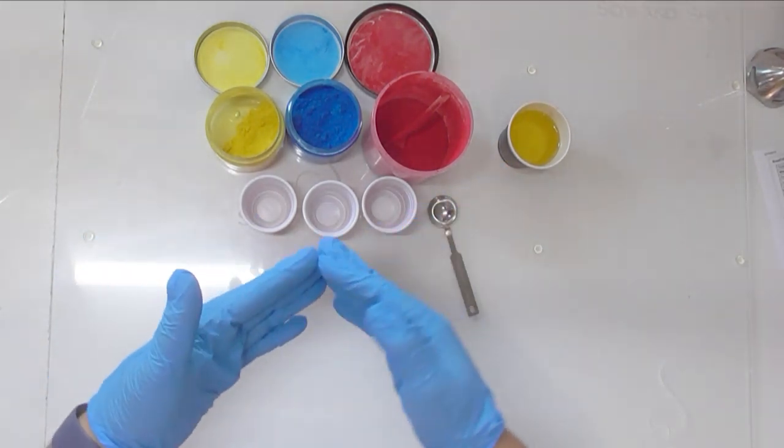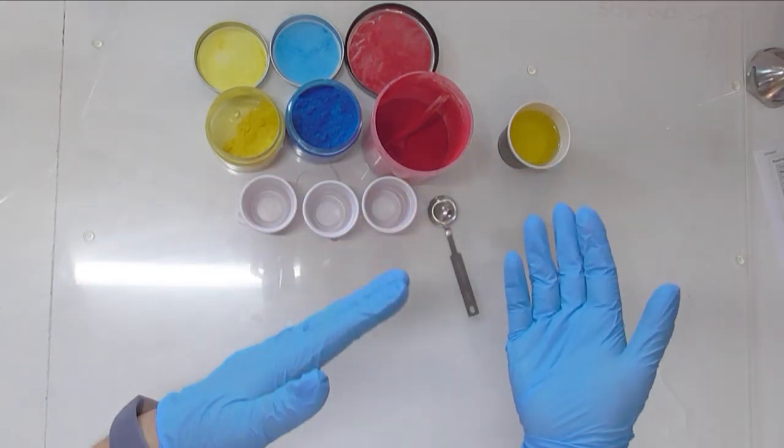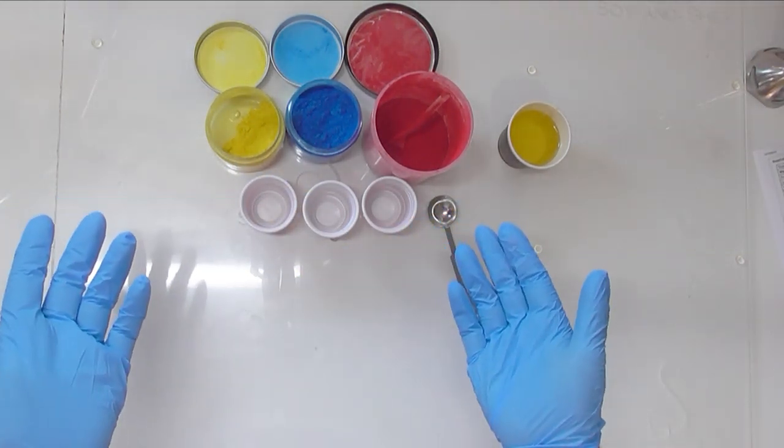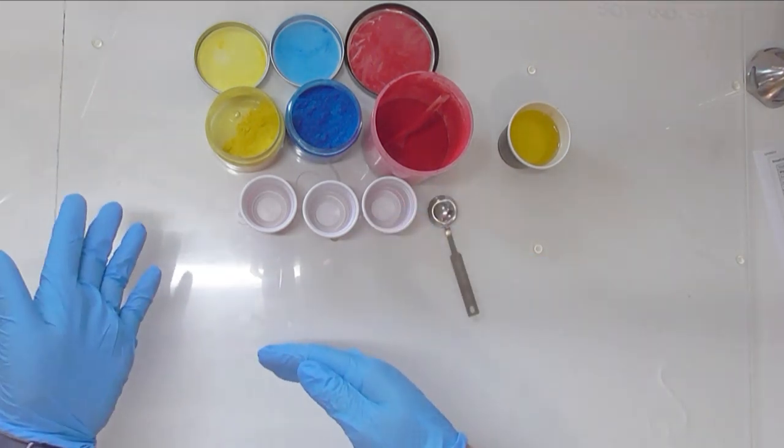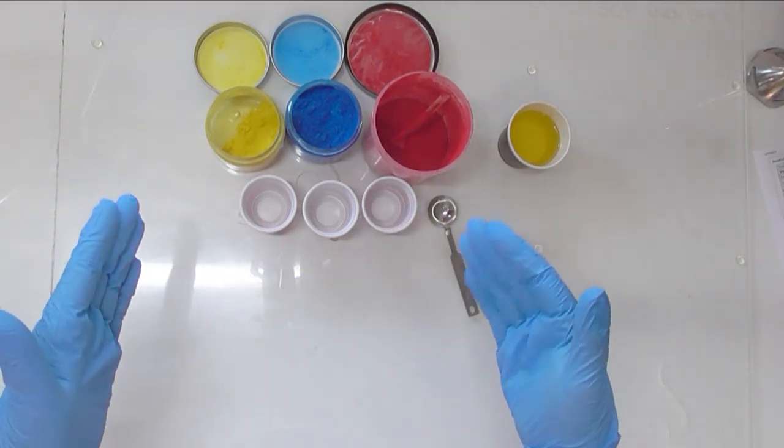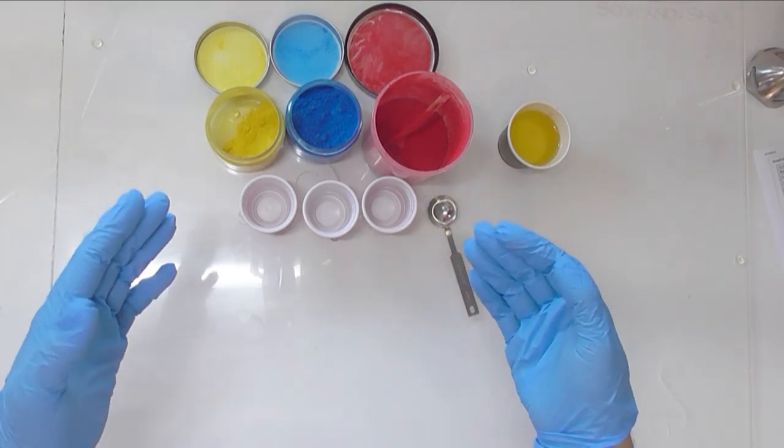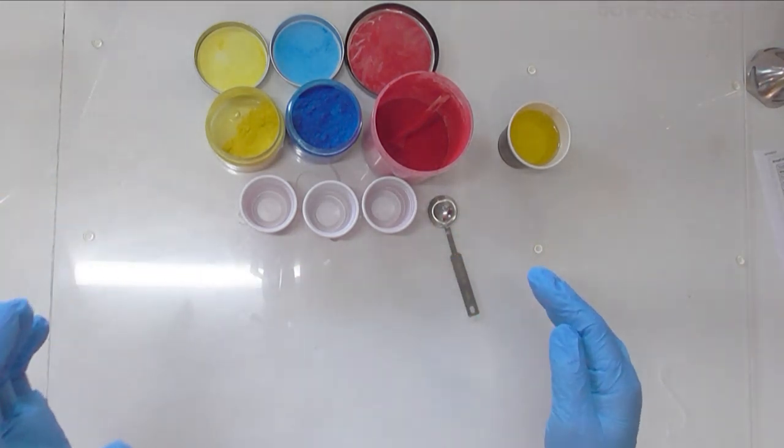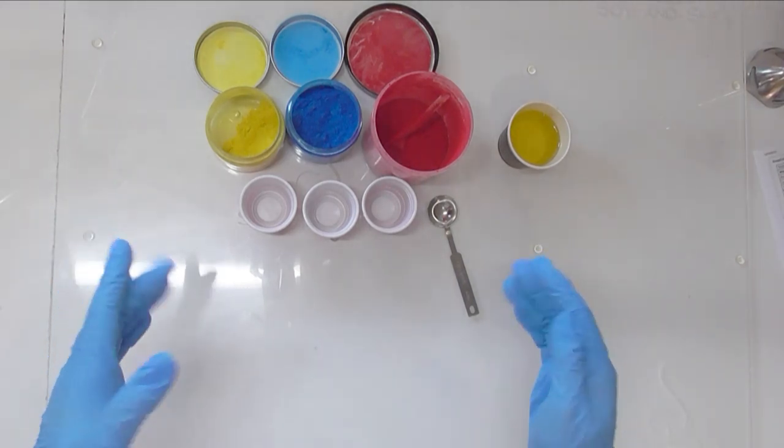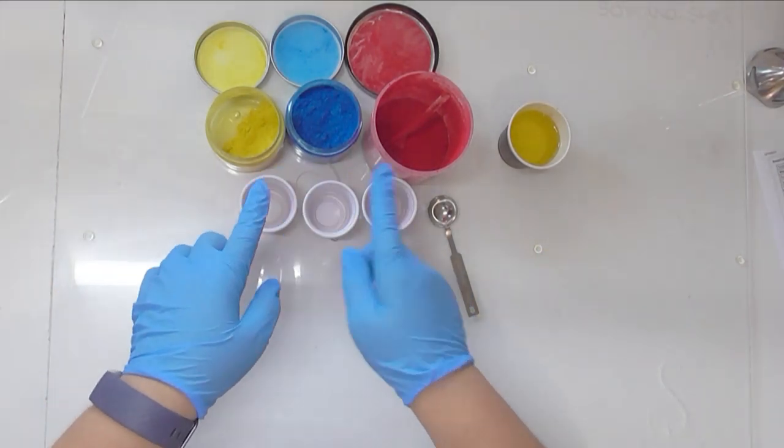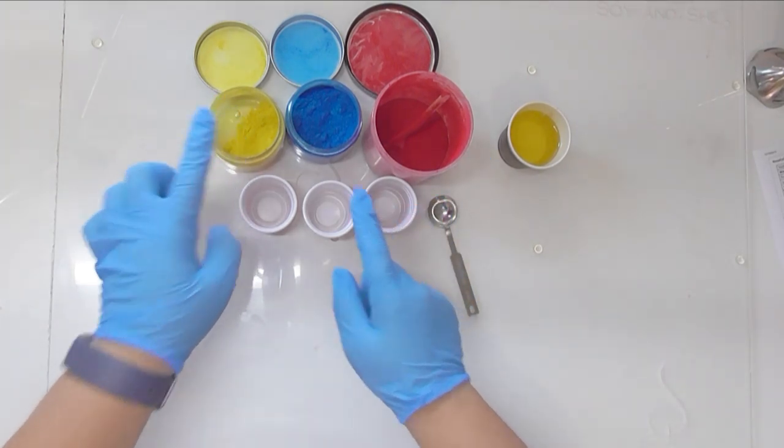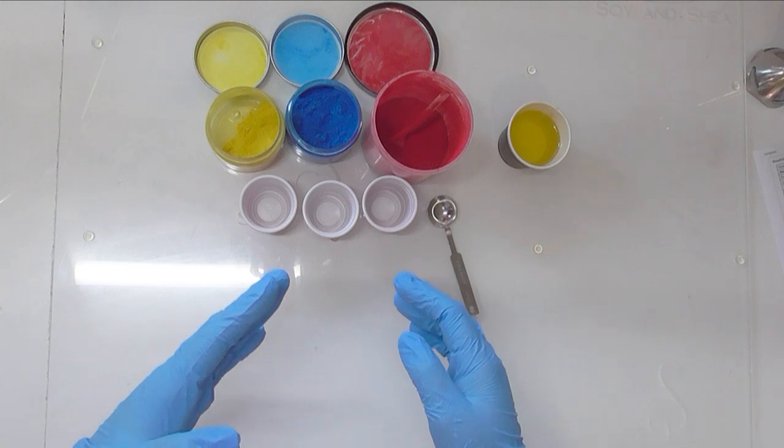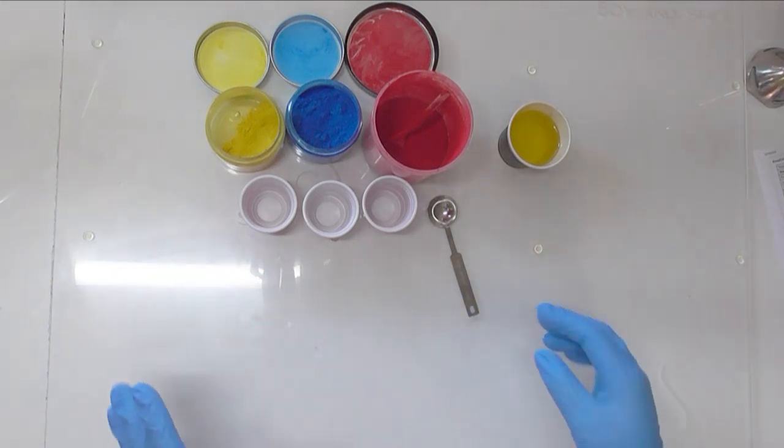From there you can actually create lighter shades of that color, and if you've got some black or activated charcoal you can also create darker shades. So from those six colors all of a sudden you've actually got the potential to make 18 colors through different shades. If you're not able to get that many, I would suggest buying one each of the primary colors, so yellow, blue and red, and from this you should be able to mix all the other colors that you are looking for.